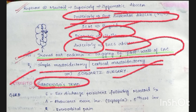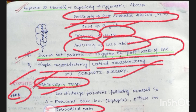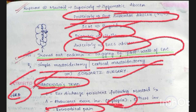In petrositis, we see Gradenigo's triad — remember GERD: G for Gradenigo's triad, E for ear discharge persistent following mastoid surgery, R for retroorbital pain, and D for diplopia. Diplopia is due to abducens nerve involvement along with fifth cranial nerve involvement.